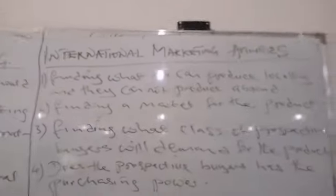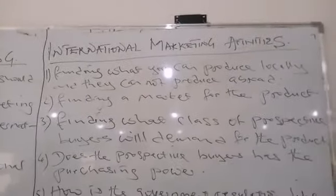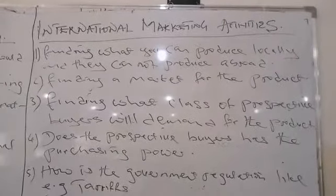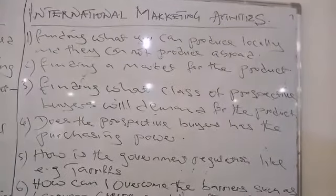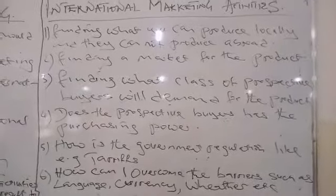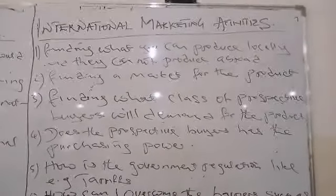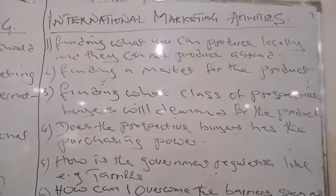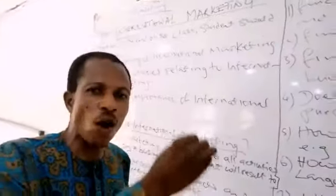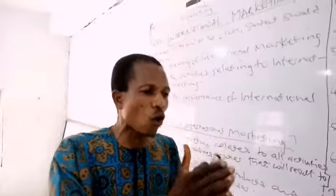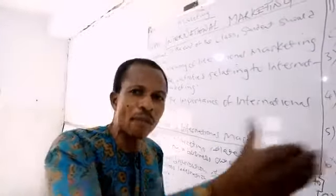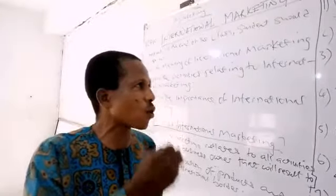What are some of the activities that a business owner will engage in that has to do with international marketing? Number one, you have to find what you can produce locally in your own domestic country that they cannot produce abroad. When you are able to carry out this finding, you are trying to create a need by other countries which they cannot produce. You produce these commodities locally and sell to them abroad so that you can earn foreign earnings.